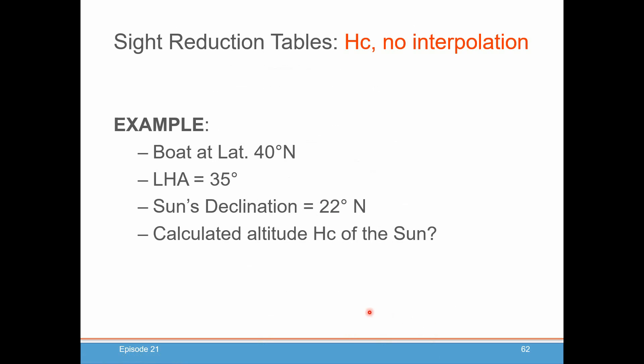Now let's do another example. We're looking at HC. We're not interpolating for minutes of declination. The boat's at latitude 40 degrees north, LHA is 35 degrees, sun's declination is 22 degrees north. What's the calculated altitude?